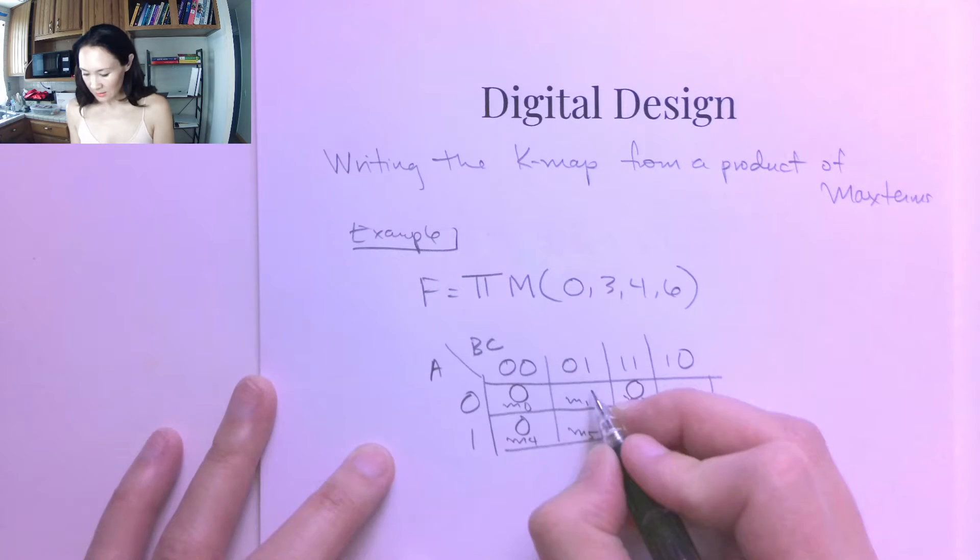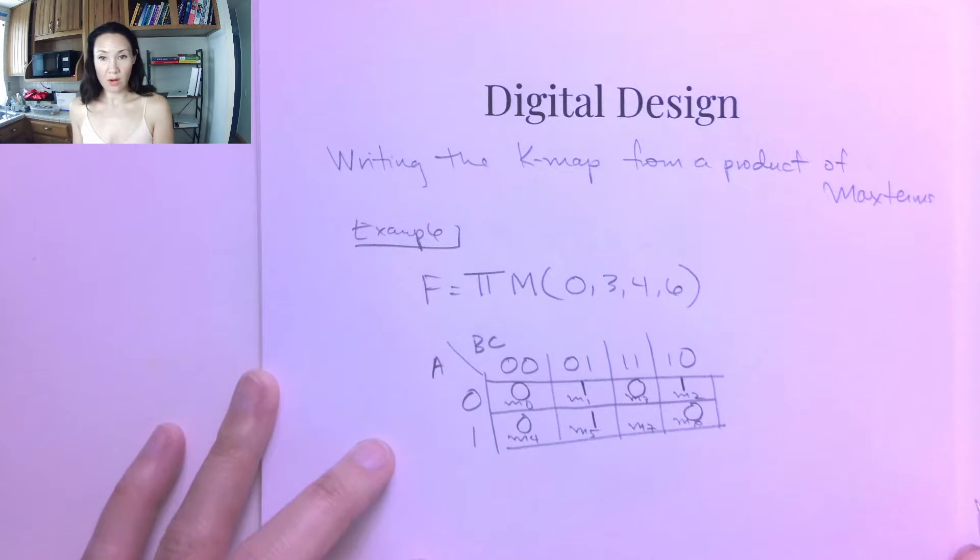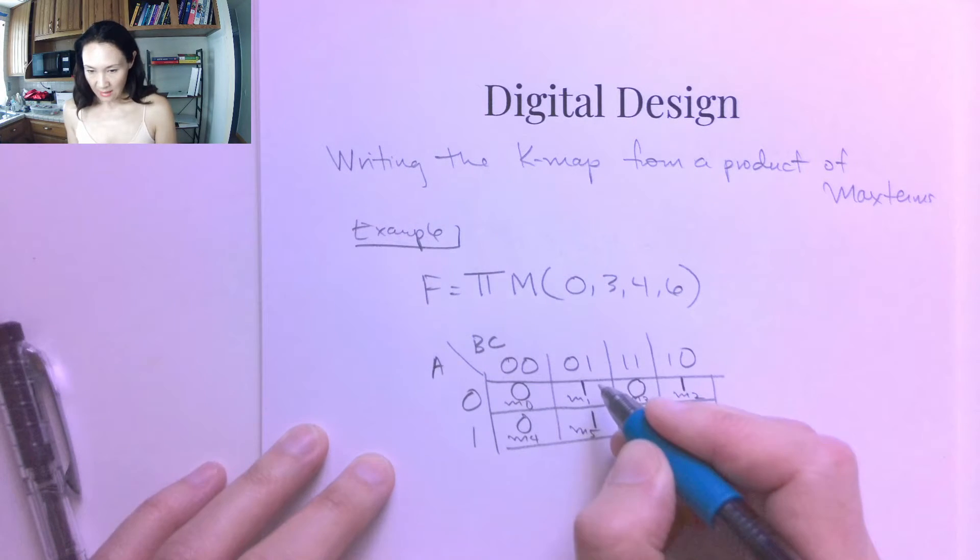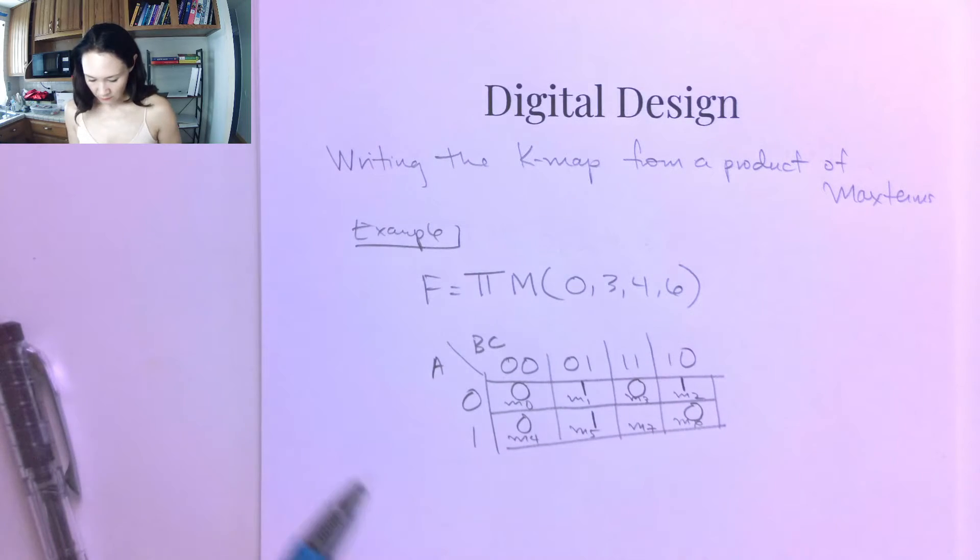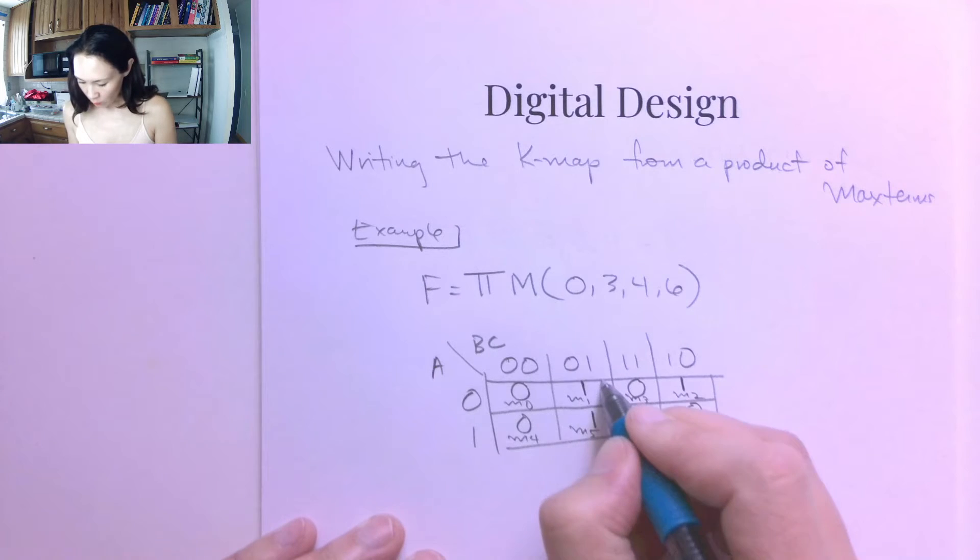So that means the other locations are where the ones are. So those are our ones. We can do groups of two. We have a group of, we've got another 1 right here. We've got a group of 1 here.